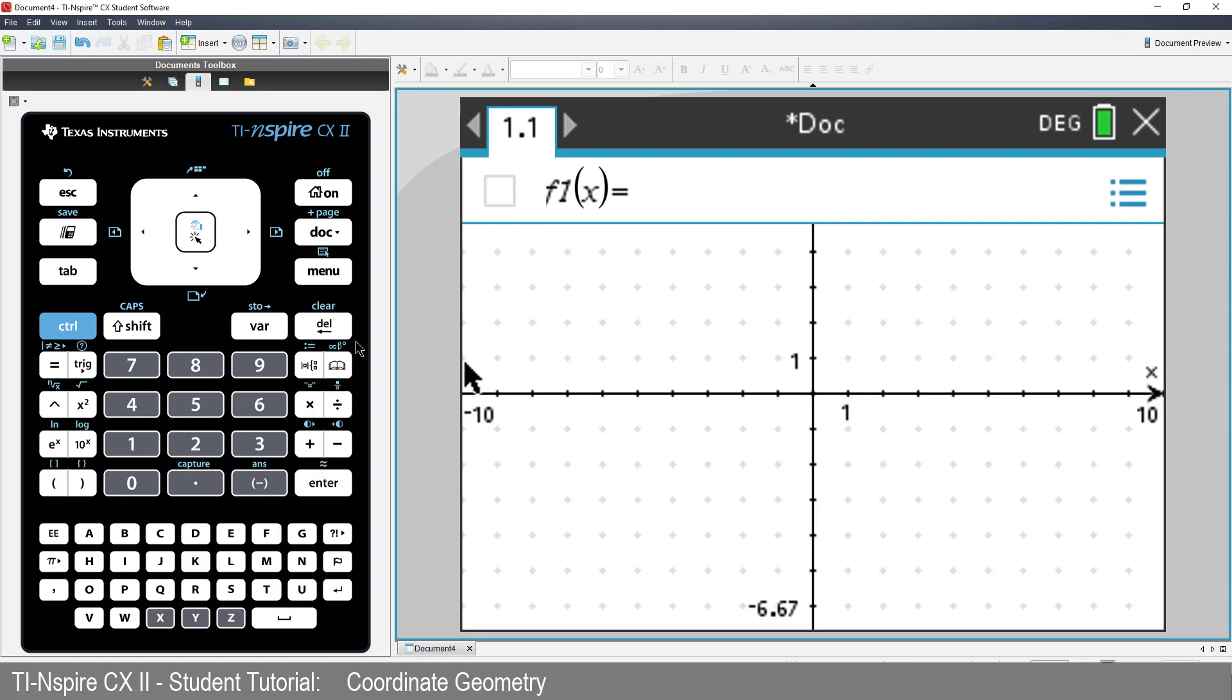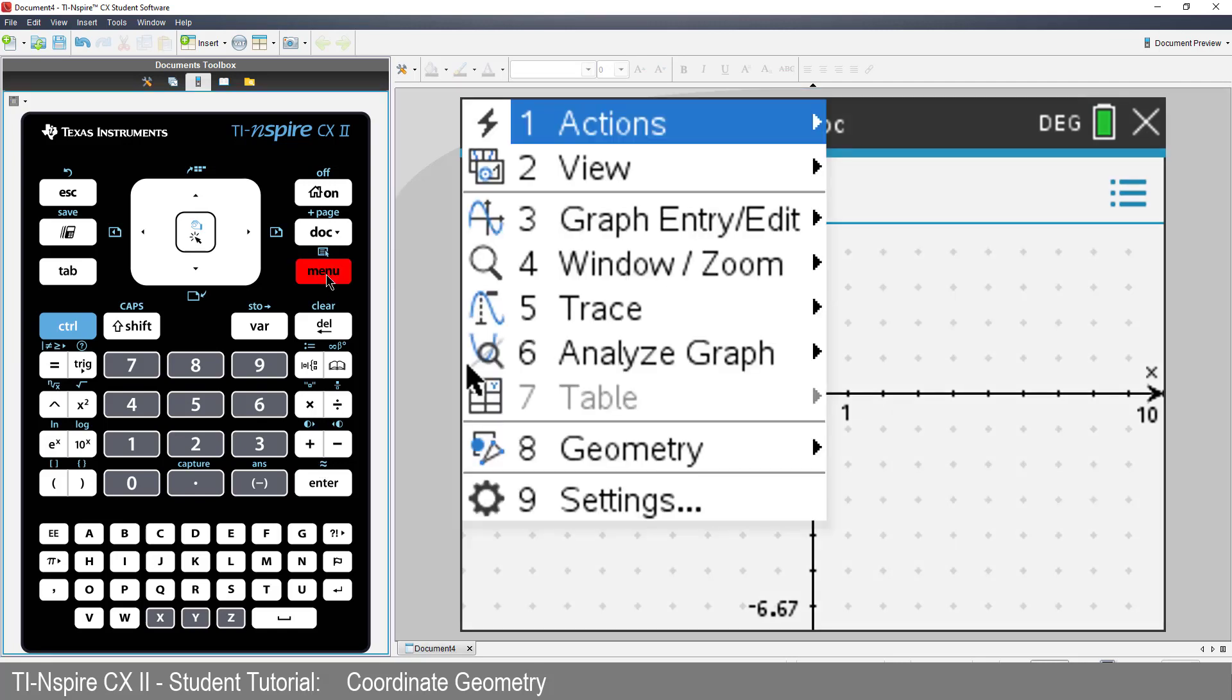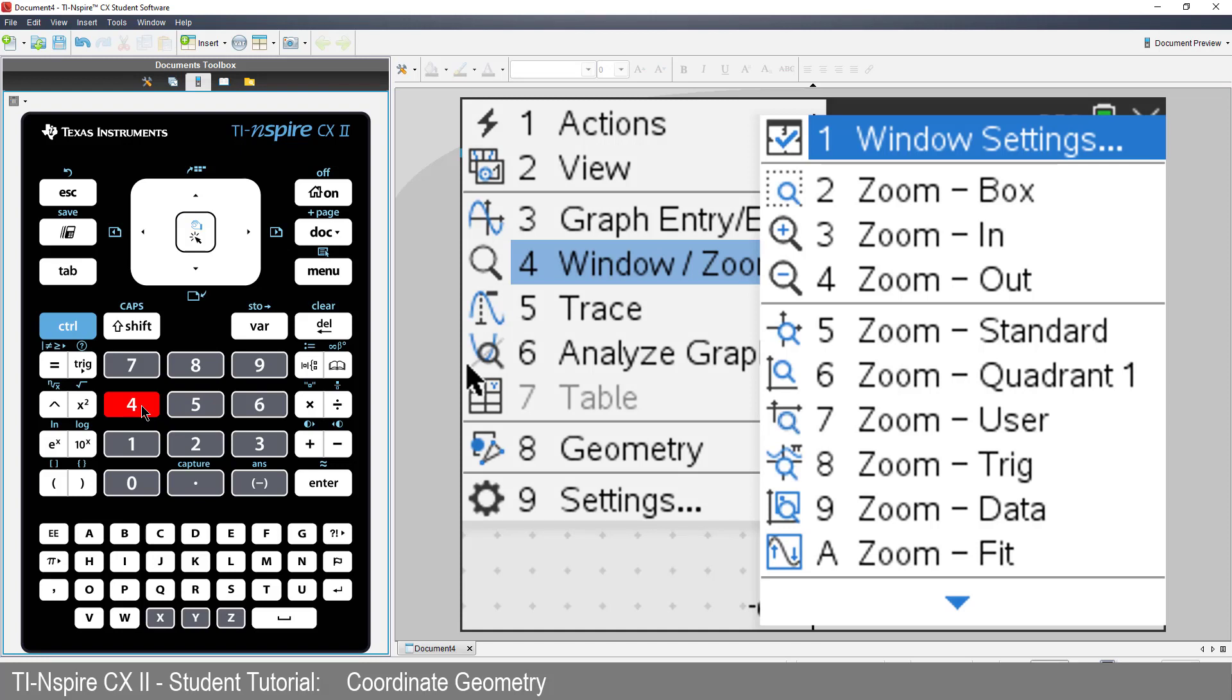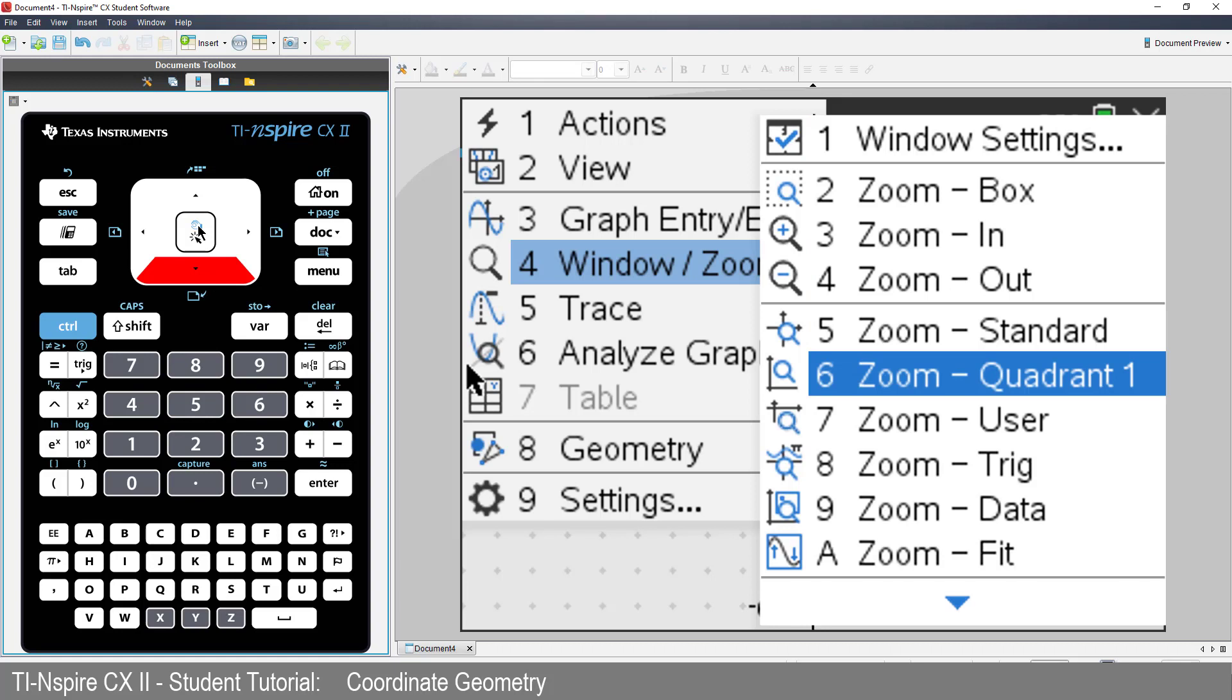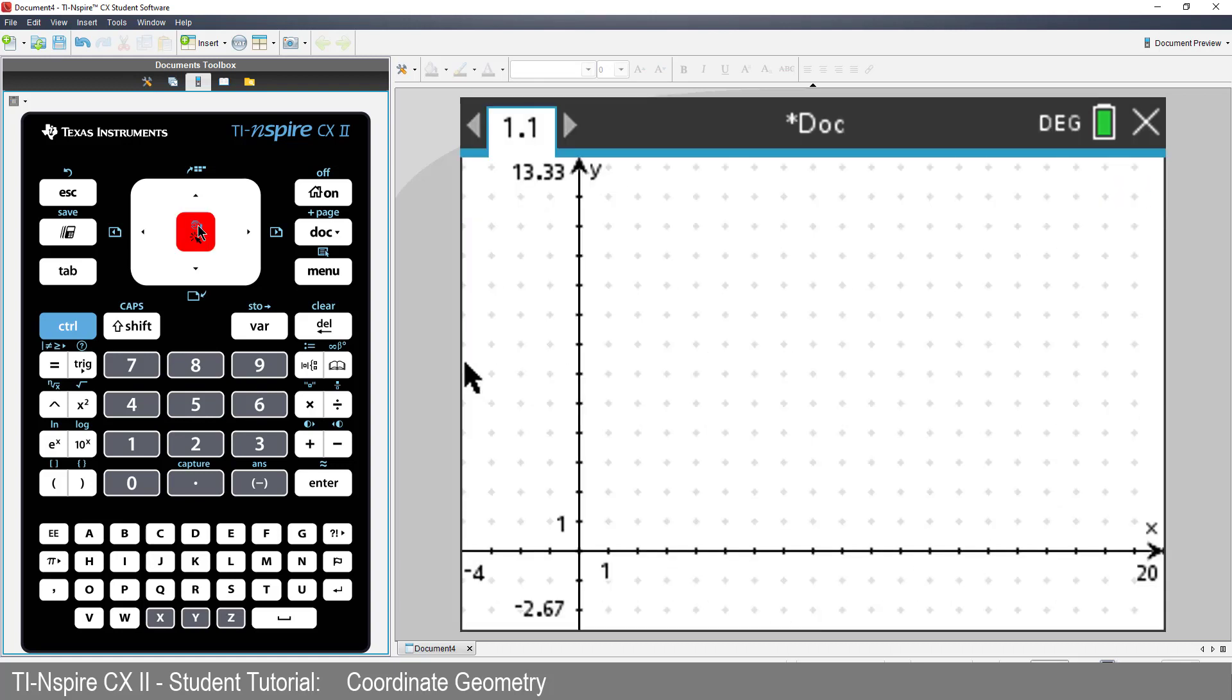We'll be working in Quadrant 1 only, so press Menu, select Window Zoom and choose Quadrant 1. This will ensure that Quadrant 1 occupies most of the screen, but more importantly that the viewing window is square, so circles will look like circles and right angles will appear as right angles.